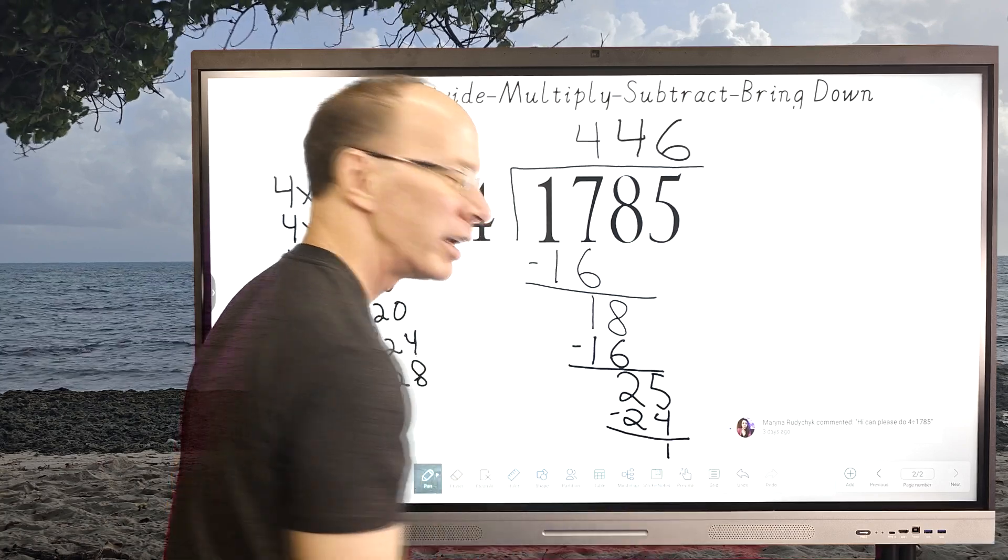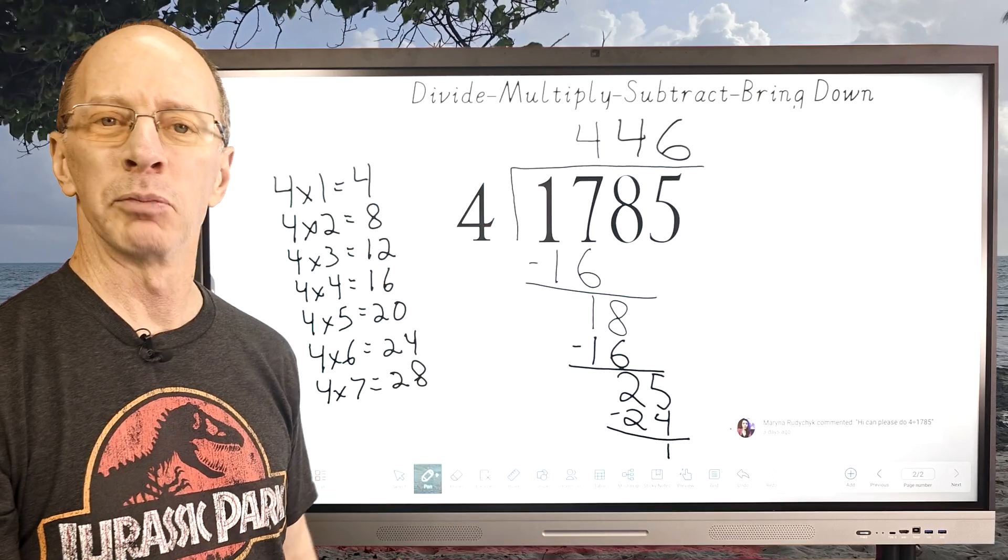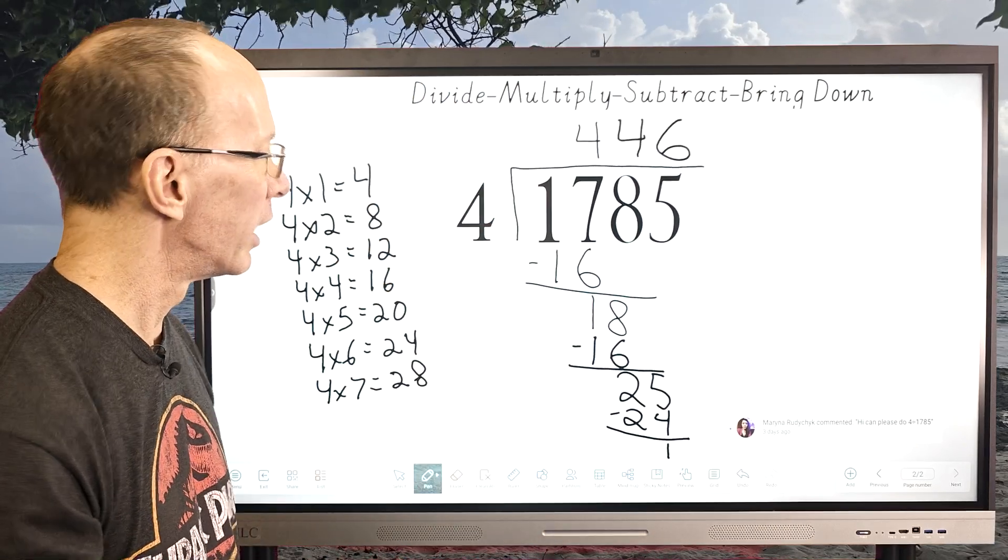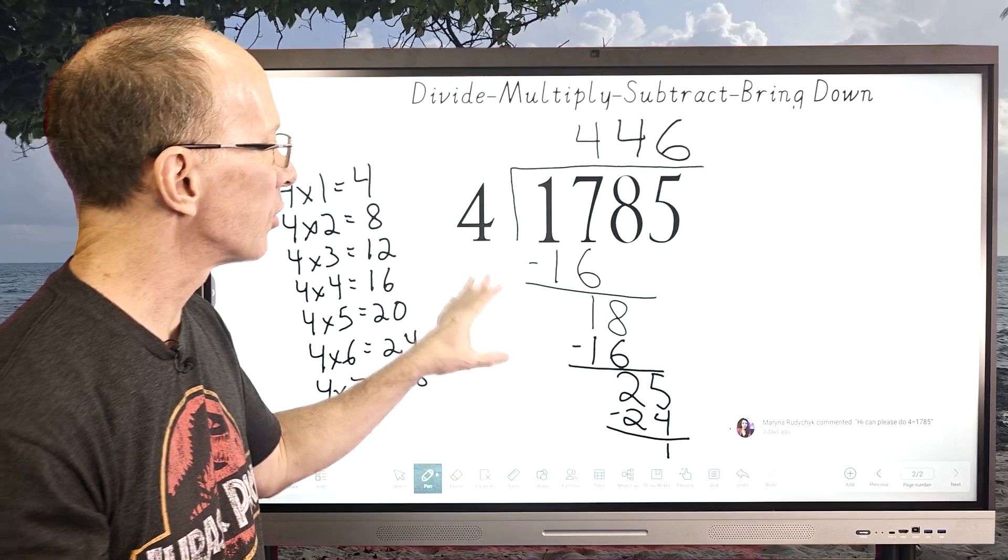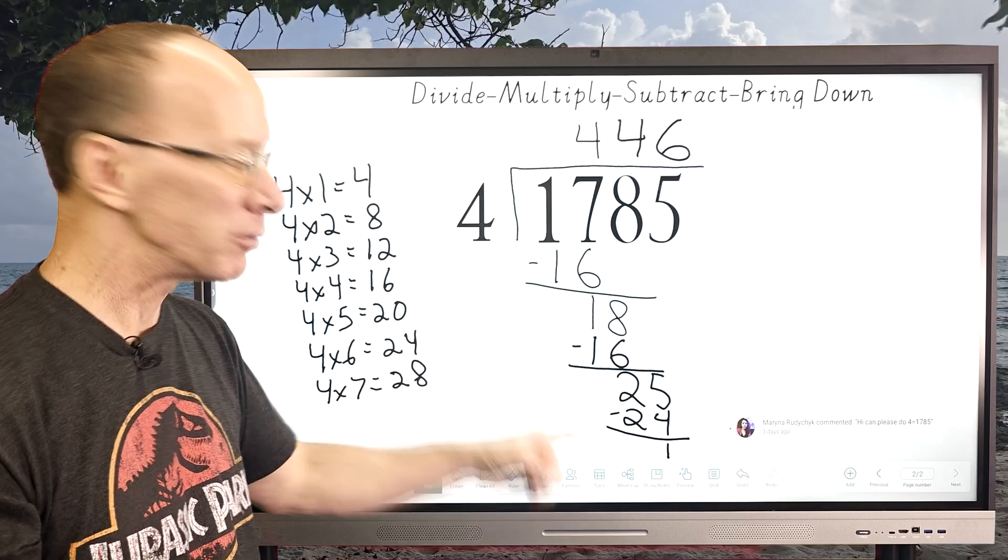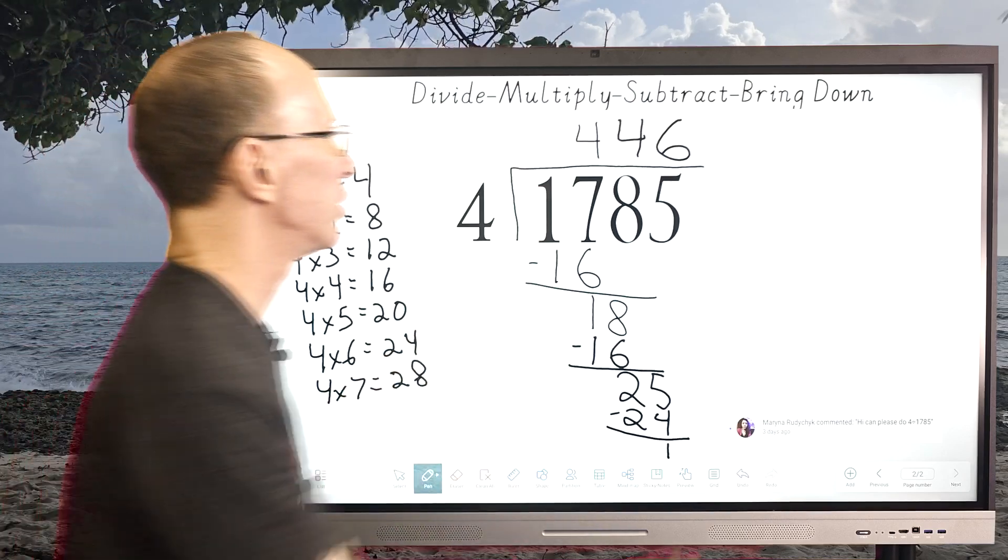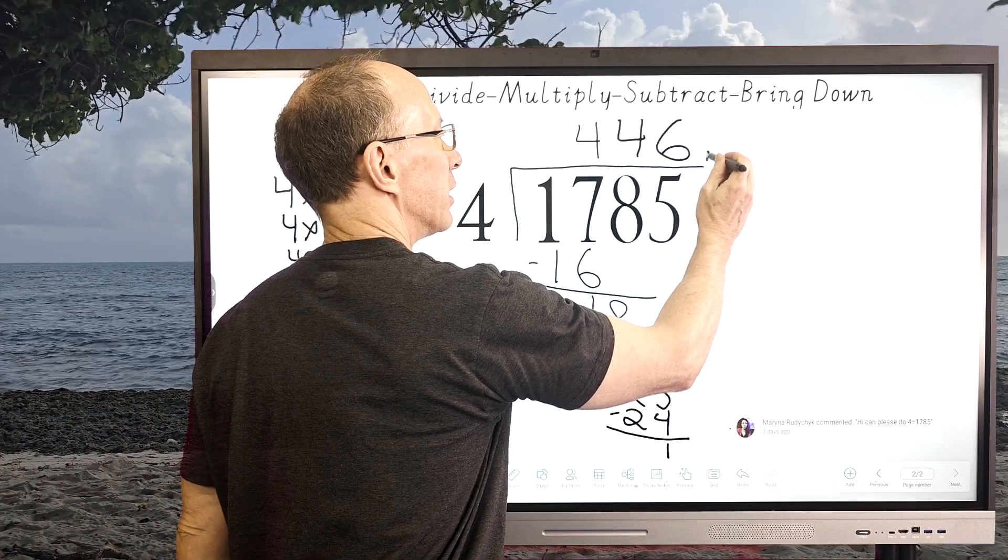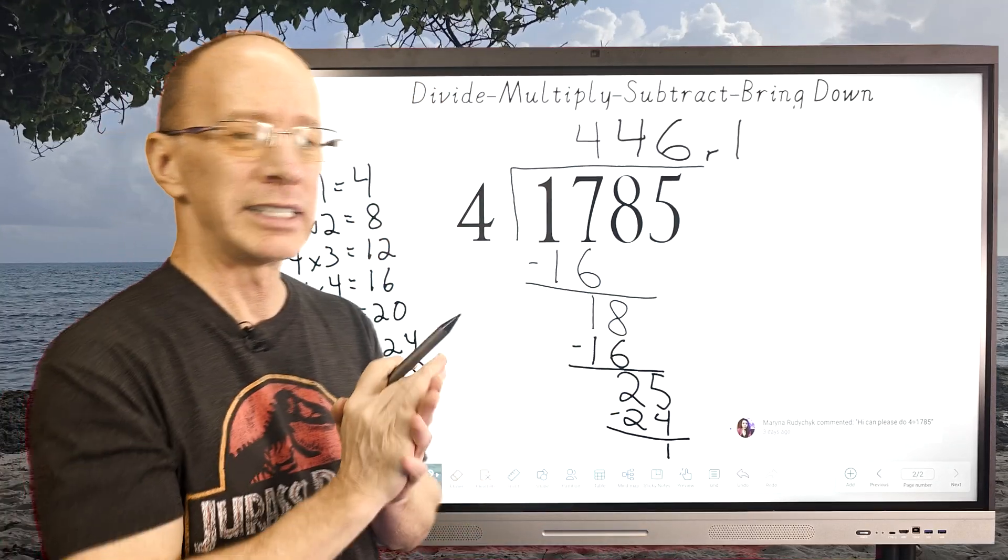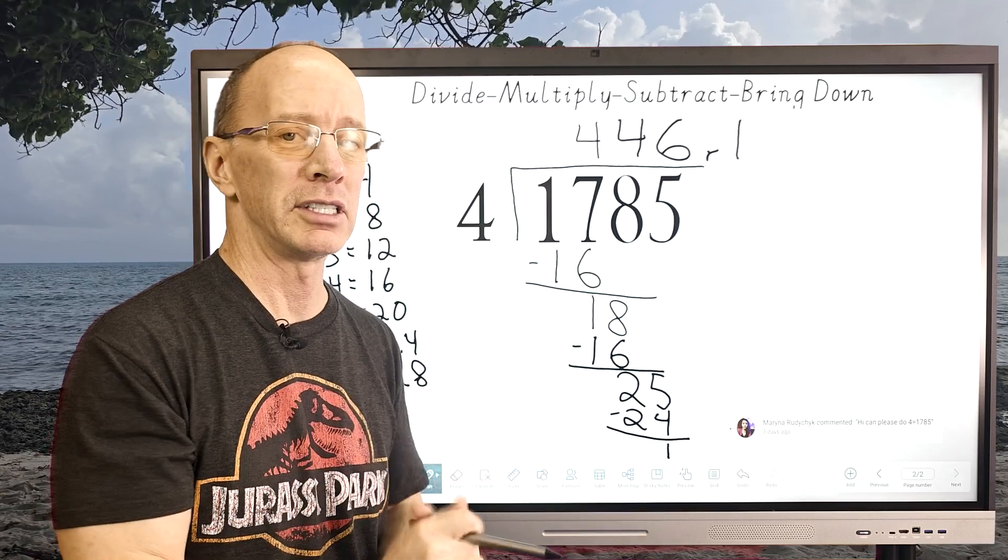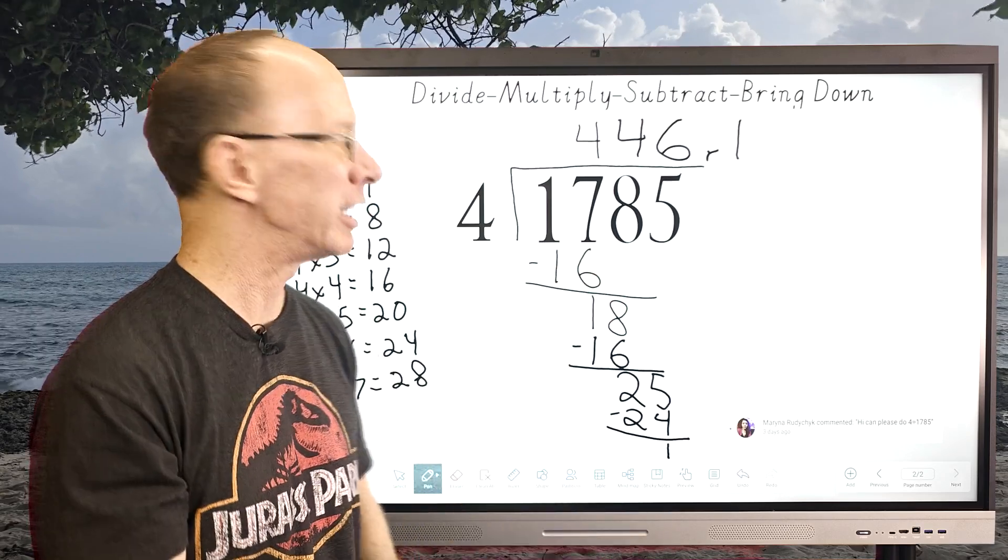And then we have 1 left over. If you can see that, it's a small one, but it's 1 left over. I don't have any other numbers to bring down, and so that's it. That would be our remainder. All we have to do is put an R right here, remainder of 1. Now I do have some videos where I take the answer and I turn it into a decimal. I think today we're just going to leave it as a remainder.